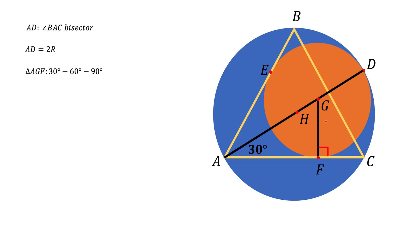In a 30-60-90 triangle, the side opposite the 30-degree angle — in our case GF — is half of the hypotenuse AG. If we denote the radius of the small circle as r, then AG equals 2r.